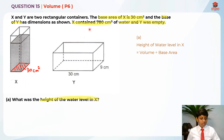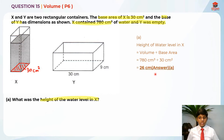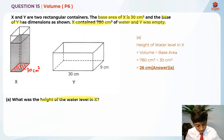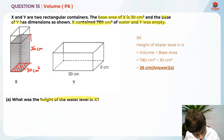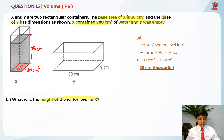The volume we know is 780 cm³. So 780 cm³ divided by 30 cm² gives us 26 cm. The height of the water level in X is 26 cm. This is the answer for Part A. Now let's move on to Part B.